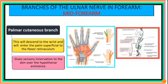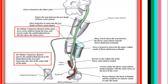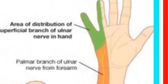The palmar cutaneous branch of the ulnar nerve is given off at the middle of the forearm. It descends to the wrist and enters the palm superficial to the flexor retinaculum, giving sensory innervation to the skin over the hypothenar eminence.